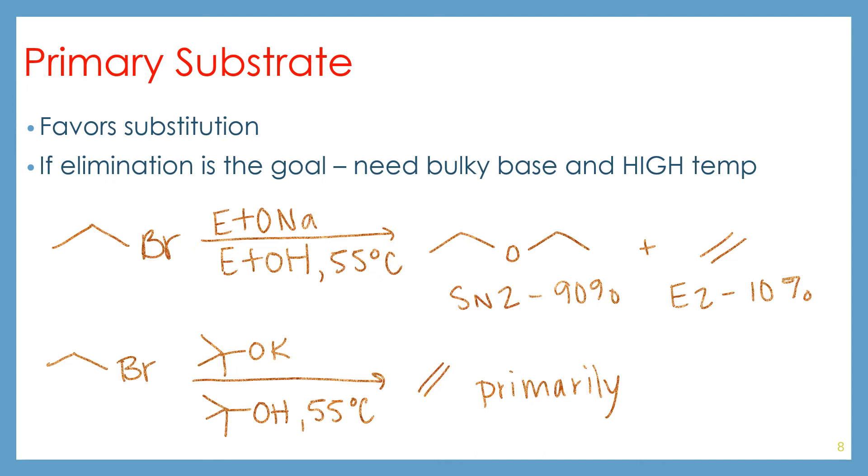If we have a primary substrate, it's going to favor substitution. If elimination is the goal, we're going to need a bulky base and high temperature. So in our first example, we have bromoethane, and we're reacting with ethoxide and ethanol. If we have a temperature at 55 degrees, we're still going to see primarily SN2 with a very small amount of elimination. Of course, increasing the temperature might give you a better chance. But remember that ethanol is going to have a pretty low boiling point, and so will bromoethane.